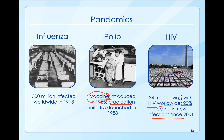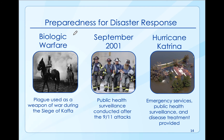HIV is worldwide and has affected 34 million people. Infections went down 20 percent starting since 2001, but the reality is this is still a very serious infectious disease that people are very susceptible to. We have great treatments today to control the disease, but not cure it.